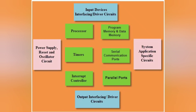The first element is the processor. There are different kinds of processors we can use in an embedded system, such as the AT89C51 microcontroller, PIC microcontroller, AVR, and ARM7. These are different kinds of processors and microcontrollers we can use as per the requirements of the user.